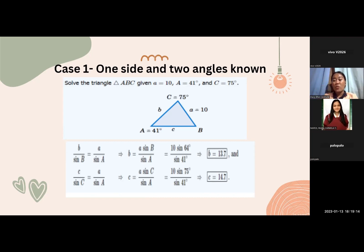Then substitute the value of sine B over sine A which is equal to 13.7. And in finding c, sine C over c is equal to a over sine A, which leads us to c equals a times sine C over sine A. Substitute a with 10 over sine A which is 41 degrees. Then it would lead us to side c which is 14.7.